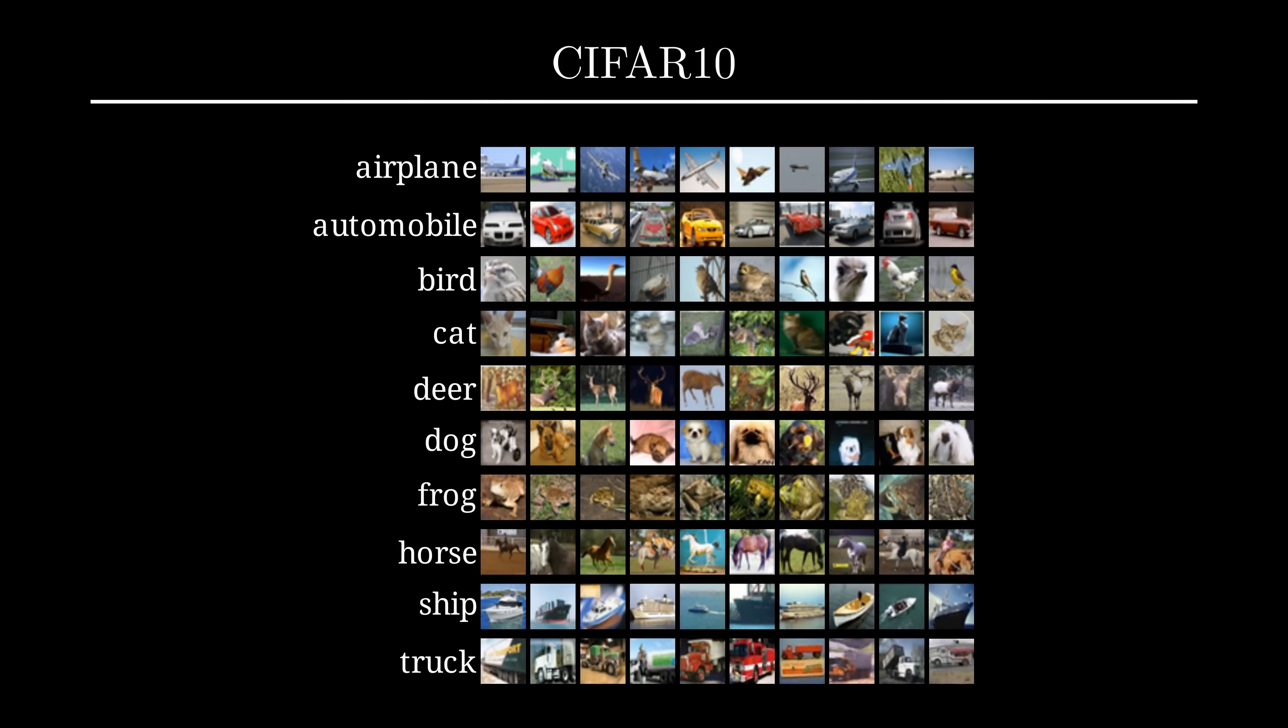As data, we take the CIFAR-10 dataset, which contains 60,000 colored images over 10 different classes such as airplanes or cats. It's considered a very easy to learn dataset, but this is more of a demonstration anyway.